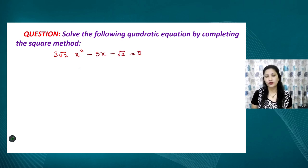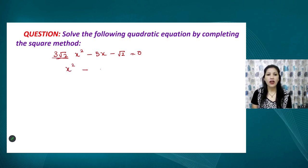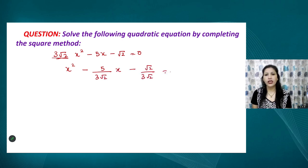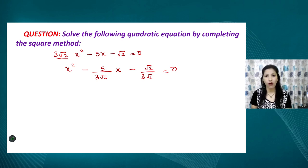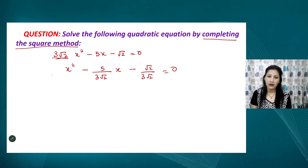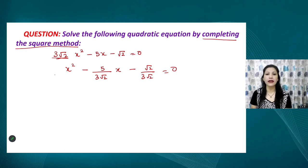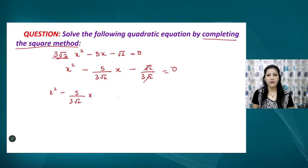Here is a question: solve the following quadratic equation by completing the square method. Let the equation be 3√2·x² − 5x − √2 = 0. Dividing through by 3√2, we get x² − (5/(3√2))x − (√2/(3√2)) = 0, which simplifies to x² − (5/(3√2))x − (1/3) = 0. Some questions are easily solved by factorization, but when a method is specifically mentioned in the question, you must use that method.